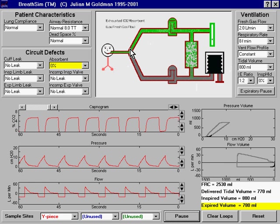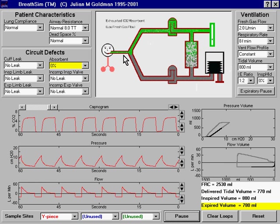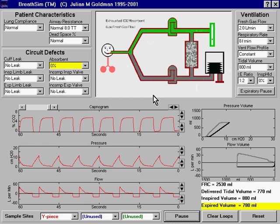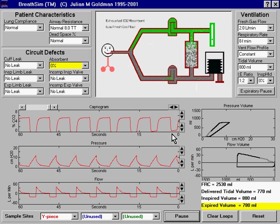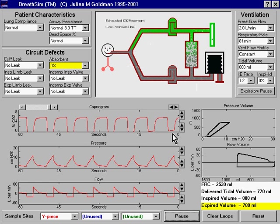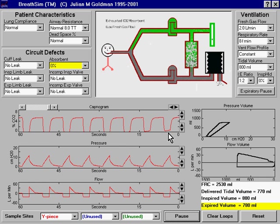The appearance of CO2 at the Y-piece and re-breathing of CO2 is easily identified by the elevation of the inspiratory portion of the capnogram, right over here.